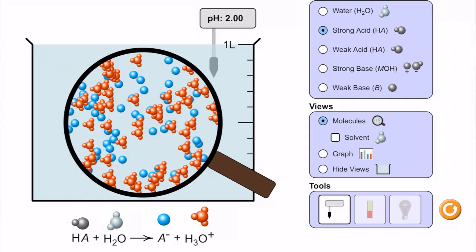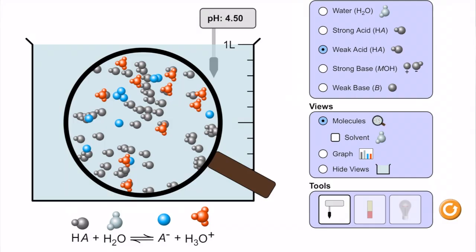Looking at the strong acid: HA + H2O yields (single arrow to the right) A- + H3O+. This is a fictional acid. In the beaker we have no molecules of HA — only A- and H3O+ ions, meaning we are 100% ionized. Our pH is 2, a pretty acidic pH. For the weak acid, HA + H2O has equilibrium arrows leading to A- + H3O+. The beaker shows HA molecules still present along with A- and H3O+ ions. The pH is 4.50 — acidic, but not as acidic as the strong acid.